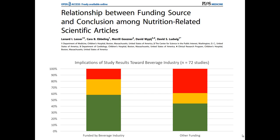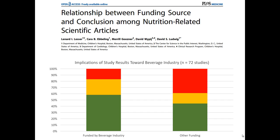Now, if the funding source had absolutely no impact on the findings of a study, we would expect to see that these two stacked bar charts would be exactly the same. However, if you look on the left, you'll notice that if the beverage industry funded an article, a greater proportion of them were scored as favorable — and indeed a larger proportion were also scored as neutral. This doesn't inherently mean that a study funded by the beverage industry is automatically biased, but it does illustrate that source effects may impact the results of a particular secondary data study.